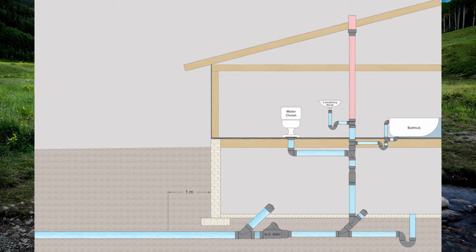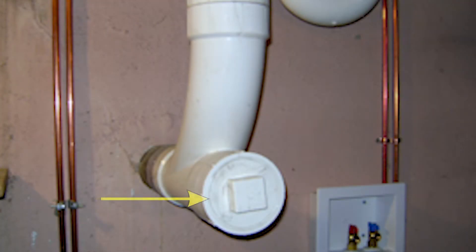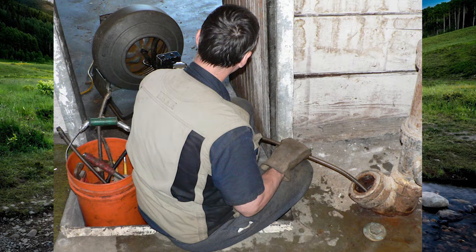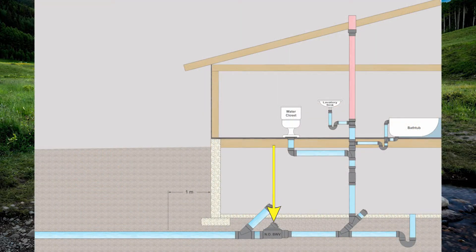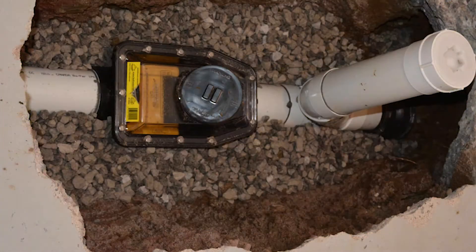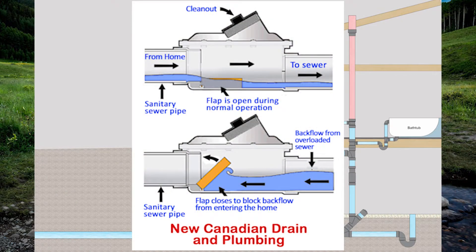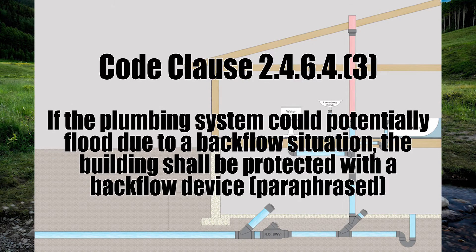Before we get to that main stack, let's talk about the two devices in the building drain. The first is the main clean out — a removable cap so you can get cleaning equipment down into the pipe to clear blockage. The next device is a normally open backwater valve. This device only allows drainage to flow in the proper direction, from the house out to the city main, but if the city main were to back up, this check valve will close, stopping that sewage from backing up into your house.